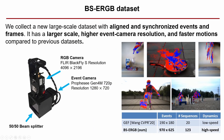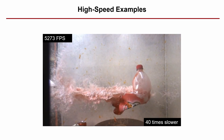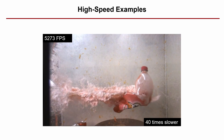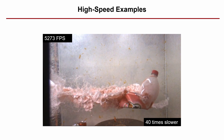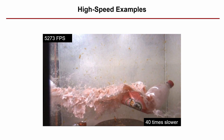We also collect a new large-scale dataset with accurately aligned and synchronized events and frames, recorded with a beam splitter. It has a larger scale, higher event camera resolution, and faster motions compared to previous datasets. By combining the advantages above, our method is able to reconstruct high-speed phenomena which are too fast to perceive with the human eye, and is able to render them in super slow motion.